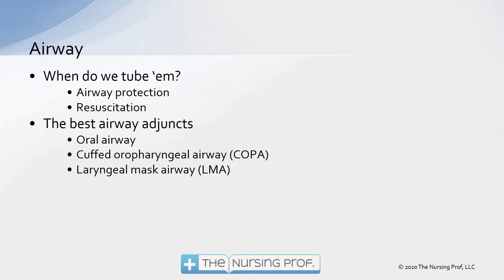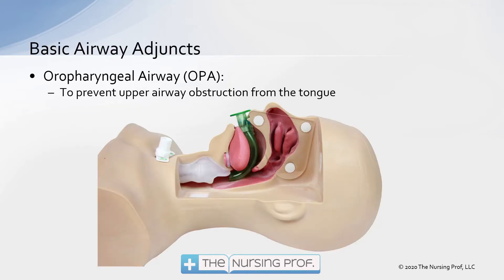First of all, let's go through our ABCs — or ACBs as the case may be. We're going to start with our airway. We need to decide when it is that we're going to tube the patient or when we're just going to use some other airway adjuncts. Let's take a look at some of them.